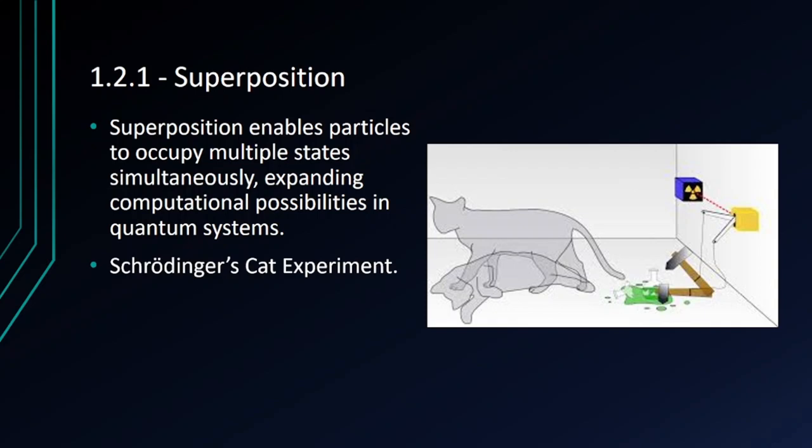For example, take Schrödinger's cat experiment. Here the cat is used to represent a hypothetical quantum system. What happens is the cat is both simultaneously dead and alive. It's a thought experiment proposed by physicist Erwin Schrödinger. By exploiting superposition, quantum algorithms can process and manipulate multiple possible solutions simultaneously, leading to the potential for exponential speed up in certain computation tasks.